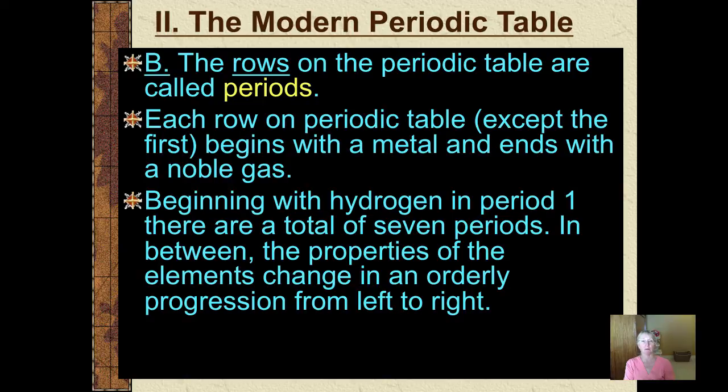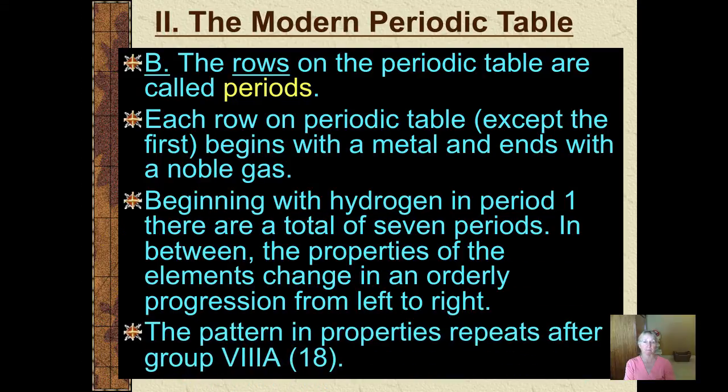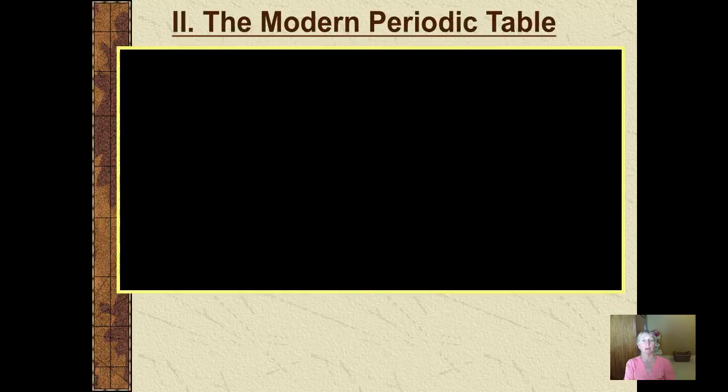Please don't forget that those seven periods are linked directly to the seven energy levels that we're aware of in the largest atoms we've discovered or created so far. As you go from left to right, from Roman numeral groups 1 through 8, there's an orderly progression or change in the properties of the elements. After you get to column 8 or Roman numeral 8A or Arabic number 18, the pattern and properties repeats again.